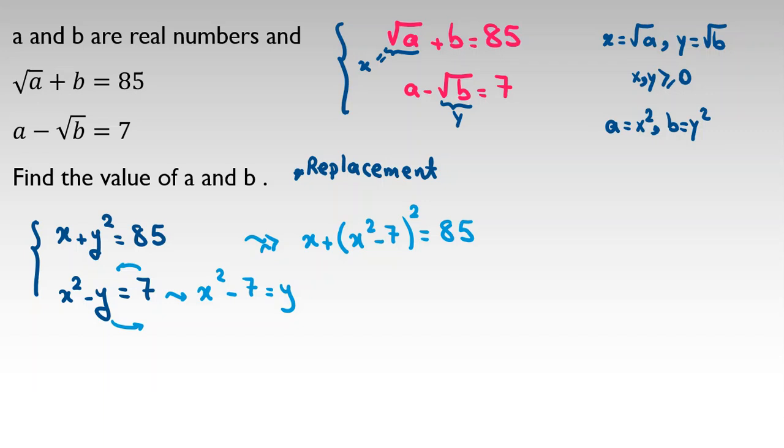For calculating this, I should tell you the identity that you should memorize: a minus b squared is a squared minus 2ab plus b squared. Now if we use this, we have x plus this identity: x squared squared minus 2 times x squared times 7 plus 7 squared, which is 85.